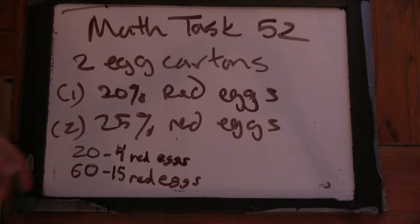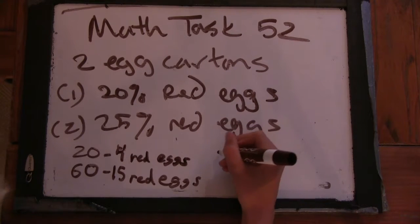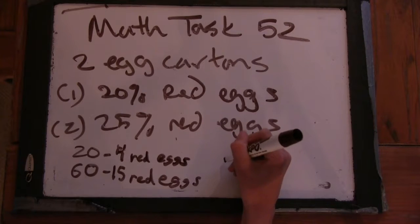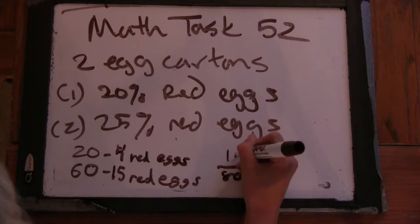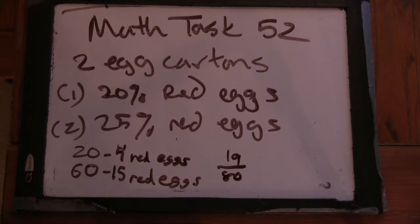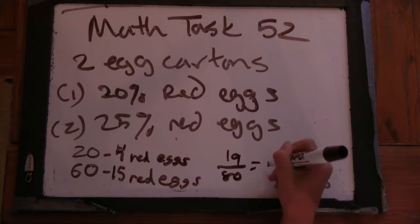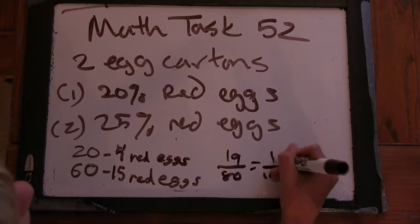Well, 20% is one-fifth. Okay. Good. Yeah. So, now we have, let's see, we have 80 total eggs. So, we're going to be over 80 and 4 plus 15. So, we have 19 out of 80 are red eggs. Ooh, 19 out of 80. And we want to turn this into something that is something over 100. But we don't know what that is. No, we don't.